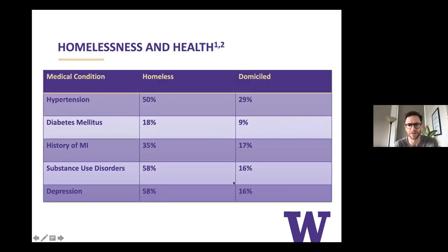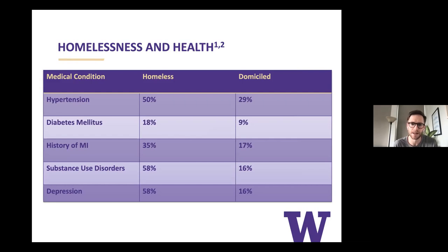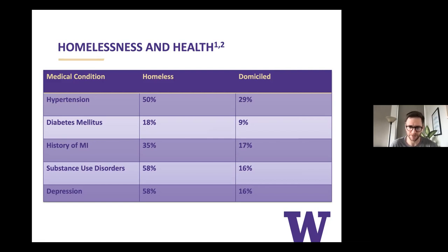How does homelessness impact health? This data is a little dated — from a survey study in 2009 — but you can see that all these chronic conditions are about two to three times more prevalent in homeless individuals than in housed people. I cherry-picked these five because they're all risk factors for cardiovascular disease or create challenges with managing it. Hypertension and diabetes can cause HFpEF and are atherosclerotic risk factors. MIs can cause HFrEF and ischemic cardiomyopathy. And with substance use — whether alcohol or stimulants — those are common causes of toxin-mediated cardiomyopathy.